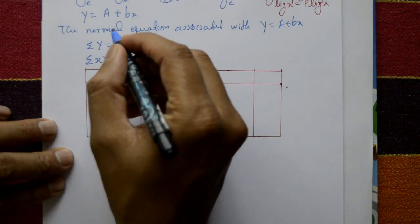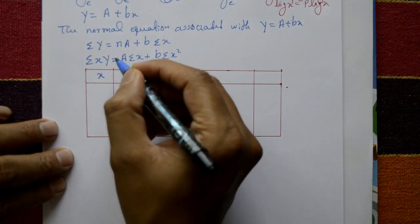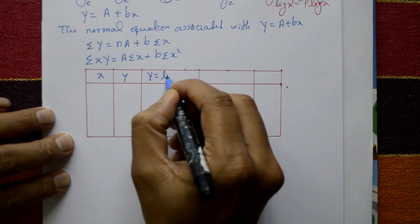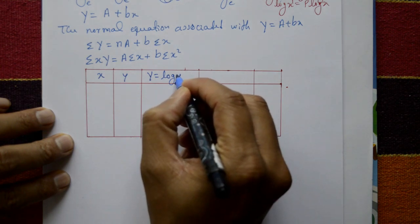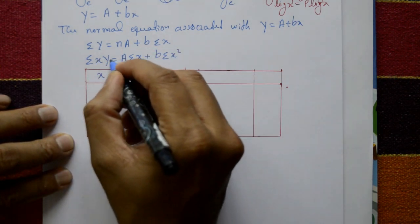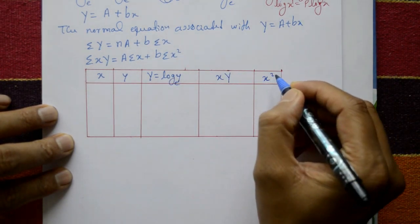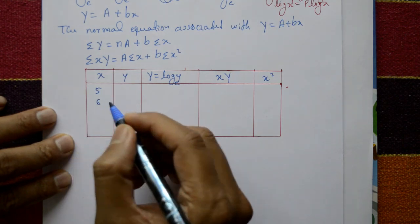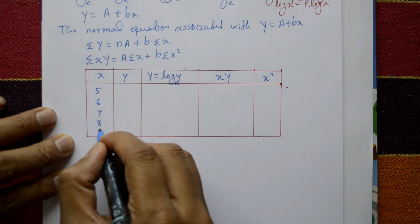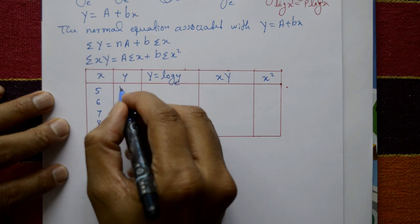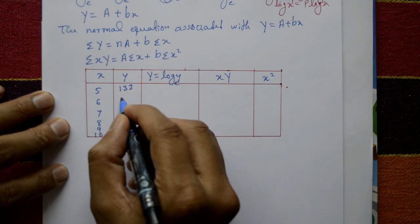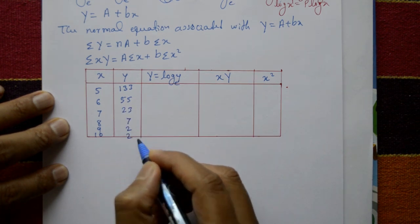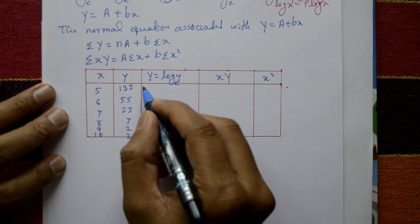Construct a table with columns: x (number of petals), y (number of flowers), capital Y = log y (base e), xY, and x². The x values are 5, 6, 7, 8, 9, 10 and the y values are 133, 55, 23, 7, 2, 2.